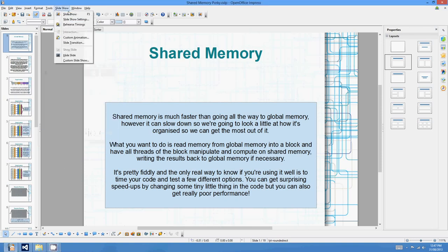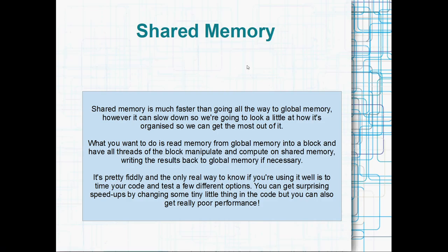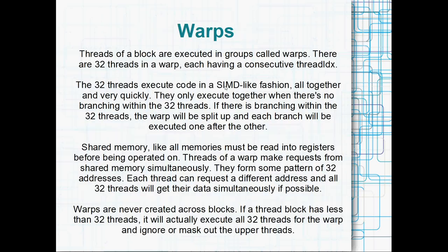G'day all, welcome to another CUDA tube. Today we're going to look in a bit more detail at shared memory, and we're going to have a look at bank conflicts and exactly what that means. We're also going to look a bit at warps, because it's really important to consider warps when you're talking about bank conflicts. Shared memory is almost faster than global memory, as we've spoken about in the past, but there are times when it can slow down fairly dramatically.